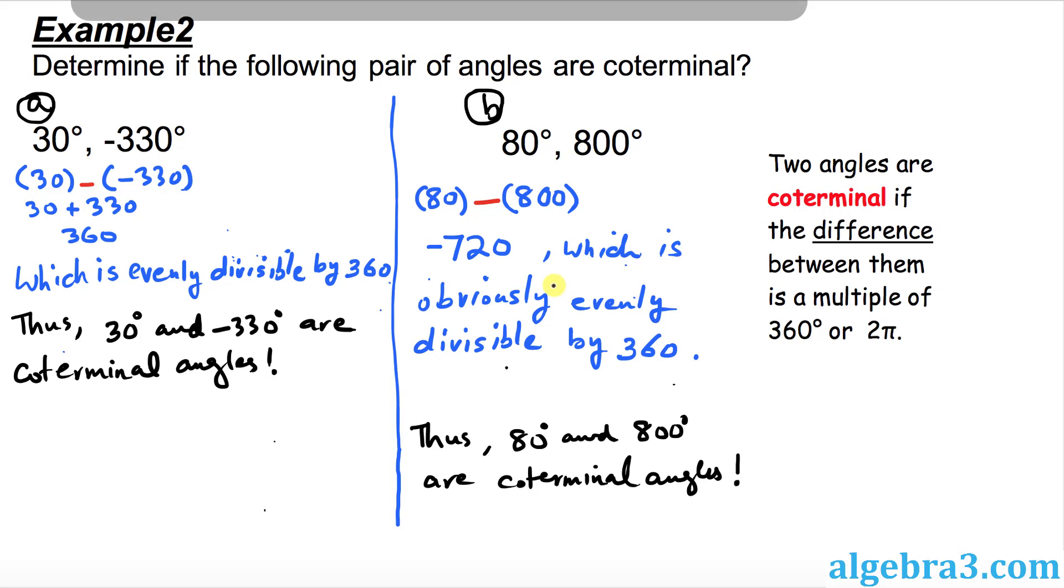Now let's look at this example 2. As you can see, we found the difference of these angles. And in both examples, A and B part, they are obviously evenly divisible by 360. So they are coterminal angles.